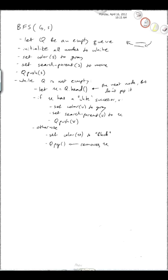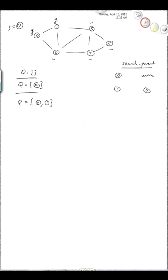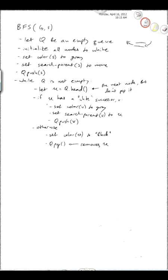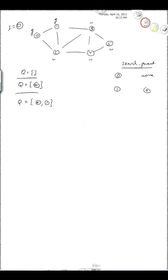We're done with the first iteration through the loop. Next time through, the queue is still not empty. U is still equal to 0 because that's what's at the front of the queue. We ask: does 0 have any white successors? It does — node 2. Since we're seeing 2 for the first time, we change its color to gray, set 2's search parent to 0, and add 2 onto the queue. So now the queue has 0, 1, and 2.